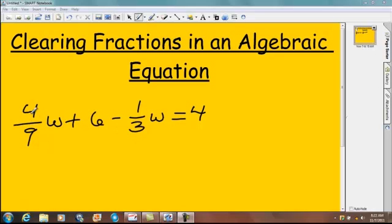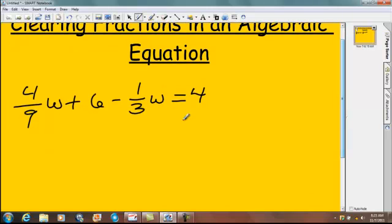We have two fractions in this problem: 4 over 9 and 1 over 3. You could keep these fractions in, use your common denominator of 9, and solve it from there. But I'm going to show you how to clear the fractions out and still get to an answer.